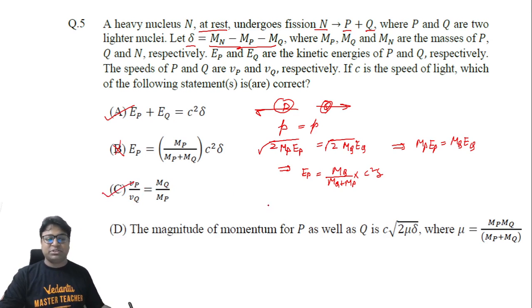Now option D talks about the magnitude of momentum. Let's say the magnitude of momentum was p. If that were the case, then the kinetic energy of P would be p²/(2MP) and the kinetic energy of particle Q would be p²/(2MQ). This sum should equal c²δ.